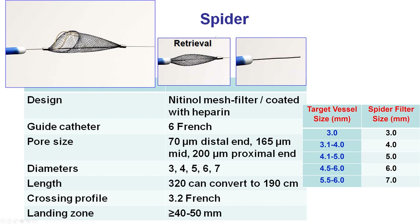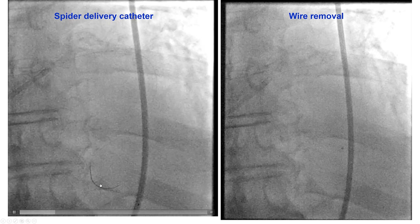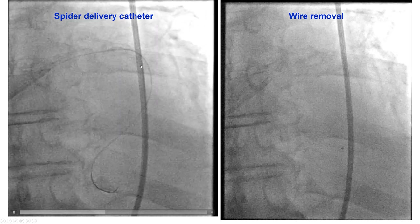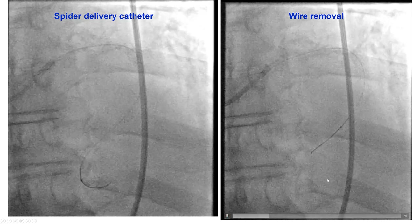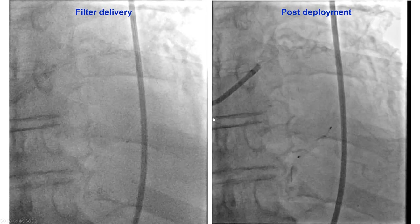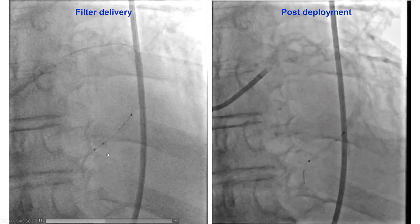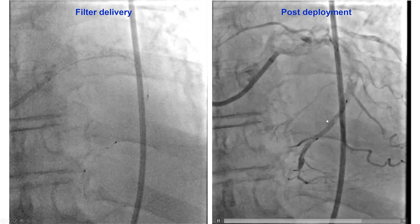We do have two kinds of filters: the FilterWire and the Spider. The Spider has a nitinol mesh coated with heparin, and both of them need a landing zone to be able to perform PCI proximal to the filter. The filter comes in various sizes that depend on the size of the target vessel. In this particular case, we decided to use the Spider. We advanced the workhorse guidewire, and one of the advantages of the Spider is that it can be delivered over a standard workhorse guidewire, which facilitates wiring through the lesion, especially when the lesions are challenging. After the catheter is positioned, the workhorse wire is removed. Then the Spider, which is inside the delivery catheter, is advanced into the target vessel at the desired location. Once it's there, the delivery catheter is pulled back and the filter is deployed. We can see here it is deployed distal to the lesion.